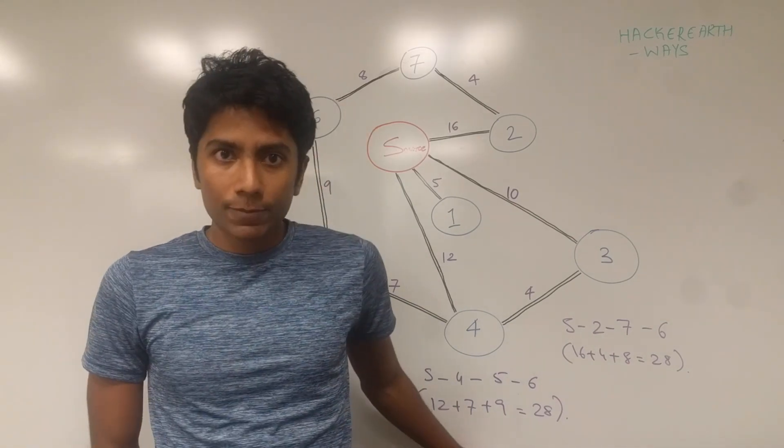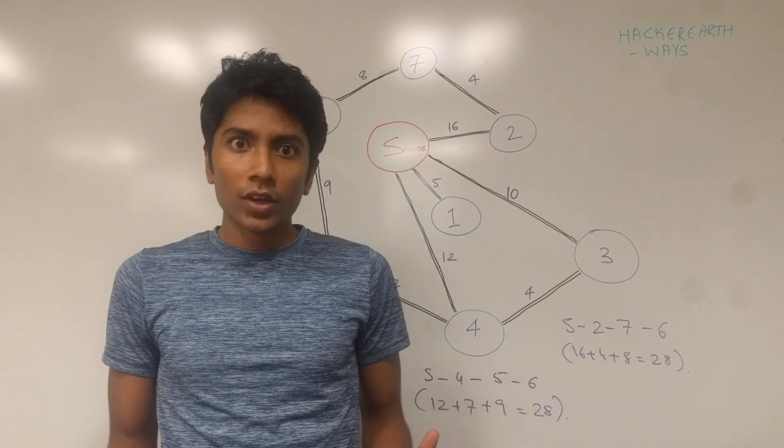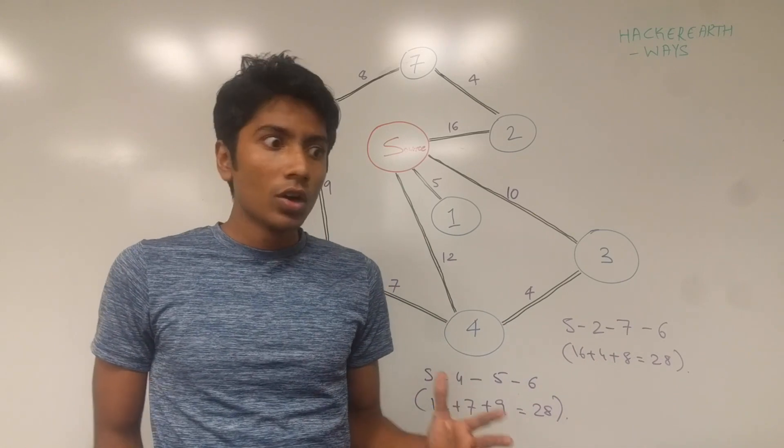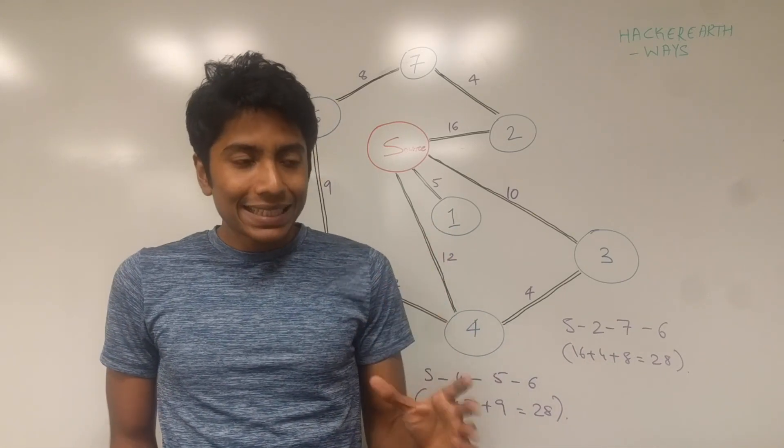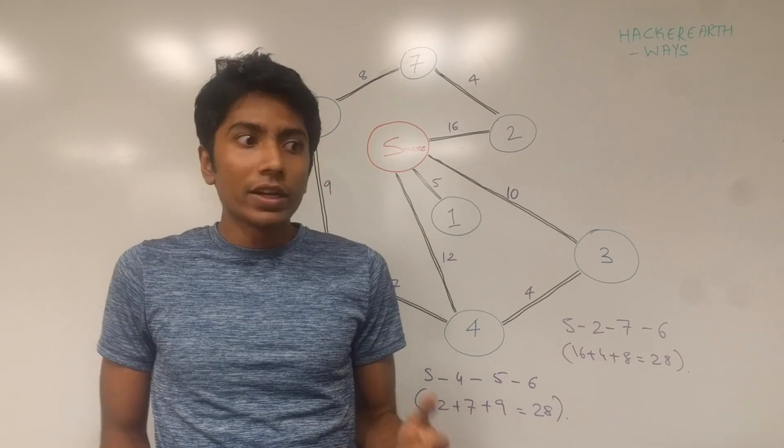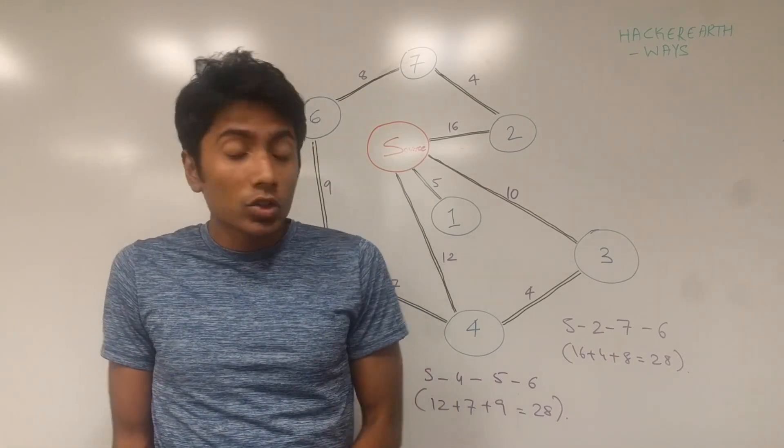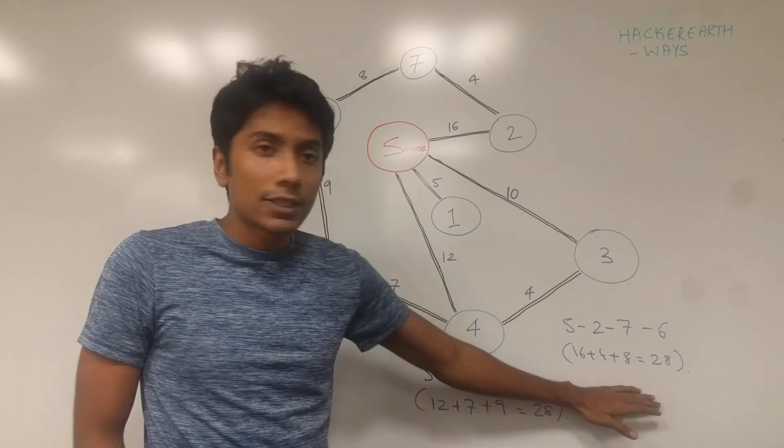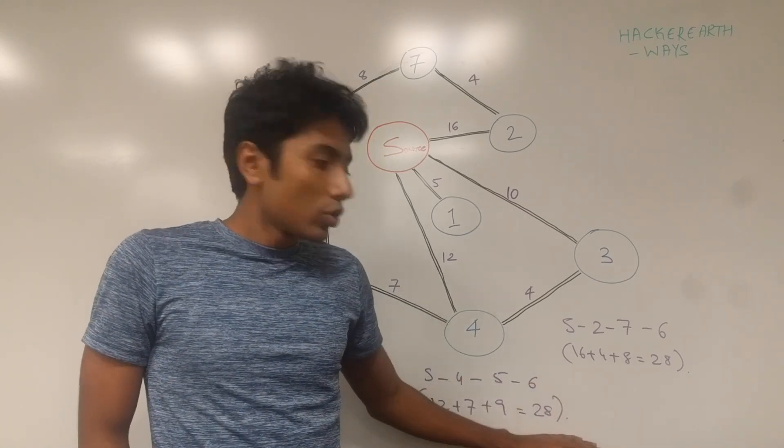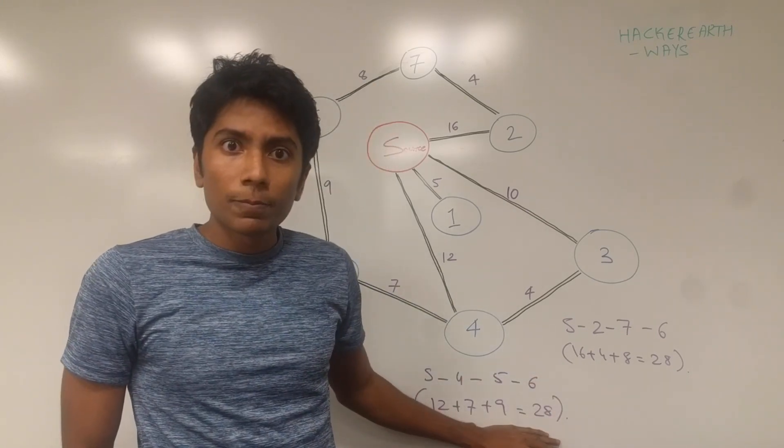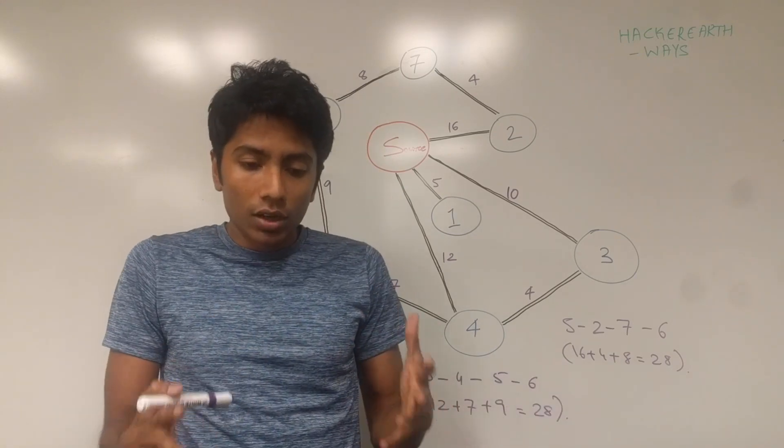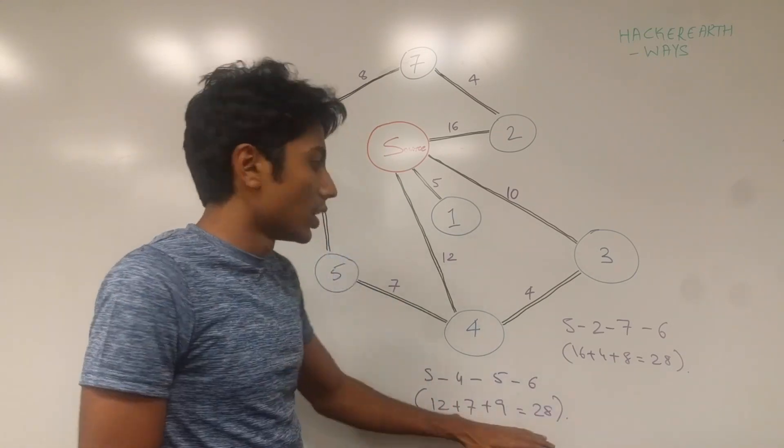The way to solve this is to use Dijkstra which we talked about in the previous video. It's a little different from what we discussed in the previous video in the sense that we were looking for the shortest possible path in the previous video so we didn't care about equal paths. In this scenario we need to take this into consideration and then actually develop our answer based on this extra criteria.